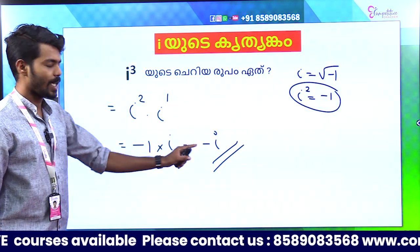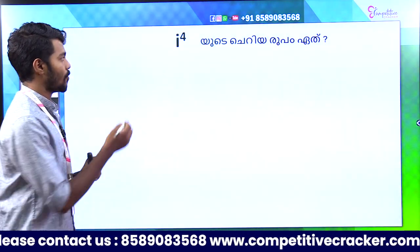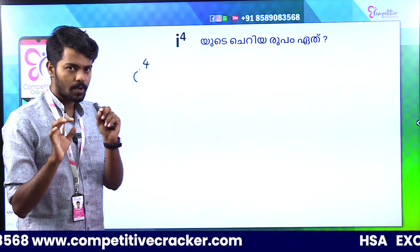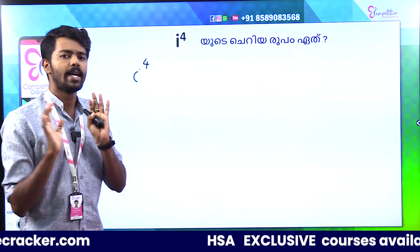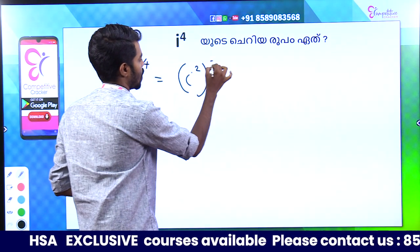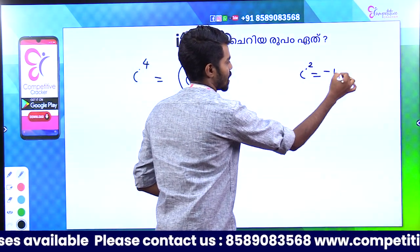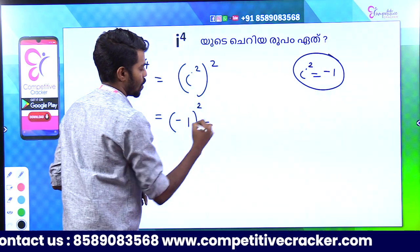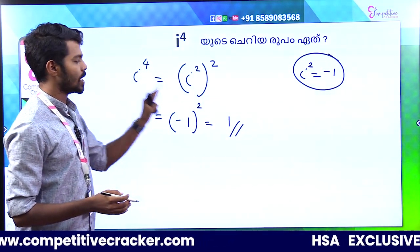So the answer for i cube is minus i. What do we call i raised to 4? i raised to 4 is i squared times i squared, which equals minus 1 times minus 1. That is equal to 1. So the value of i² is minus 1, i³ is minus i, and i⁴ is equal to 1.